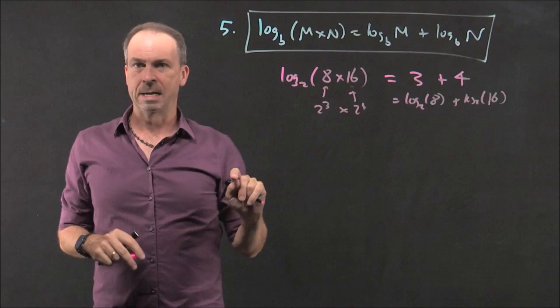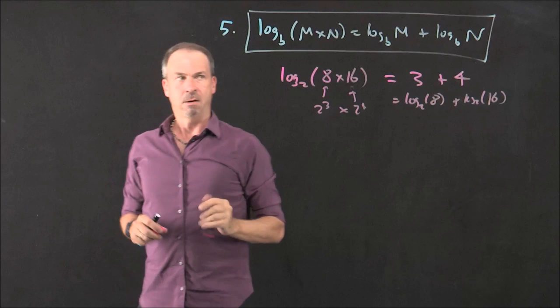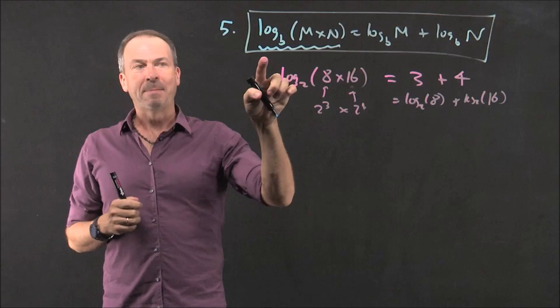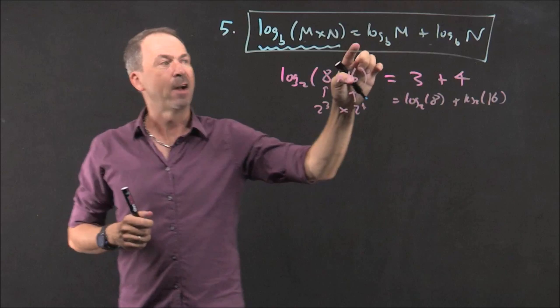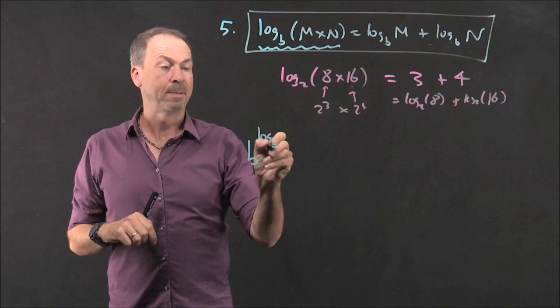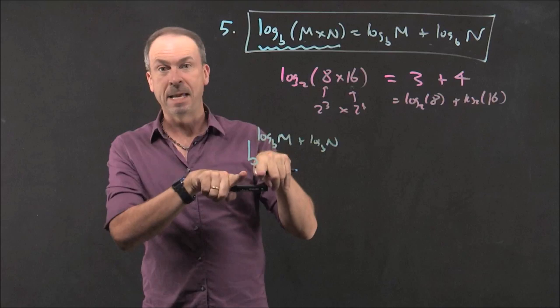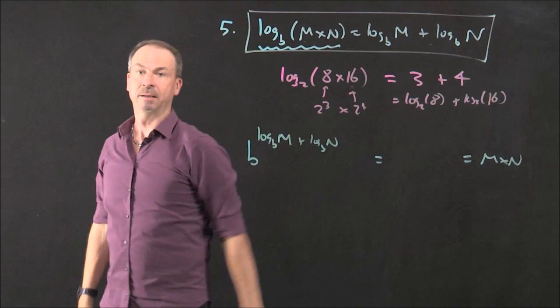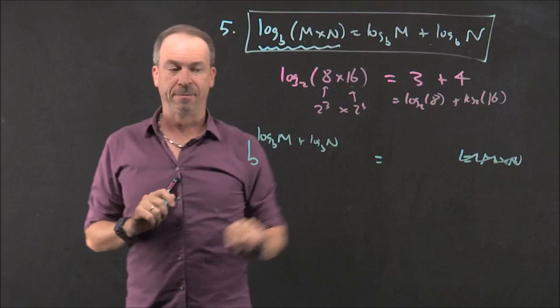All right. I want to give the full proof of this right now. Why would the logarithm of M times N have to equal the sum of the logarithms? All right. So I'm going to think through the logic here. This left side, it's claiming the power of B that gives the answer M times N is this thing. That is, if I use this thing as a power of B, I should get the answer M times N. That's the claim. Let's try it out. Let's use this thing as the power of B. Log base B N plus log base B of N. If I use it as a power of B, it's claiming I should eventually get this M times N. That's what I need to check.